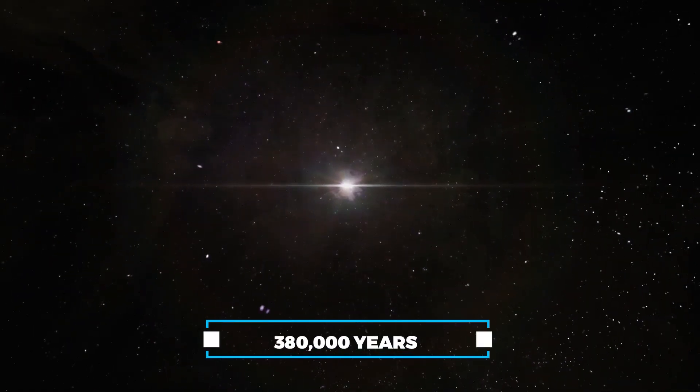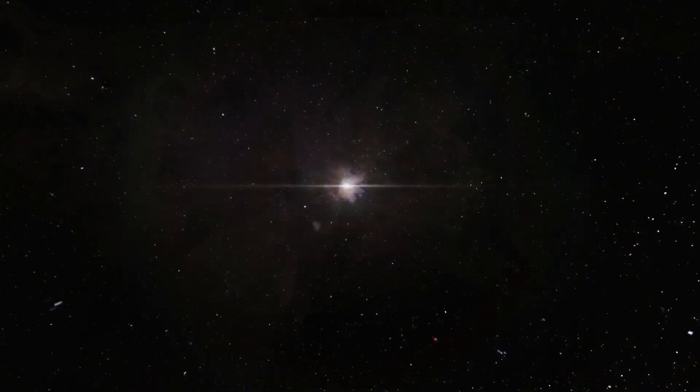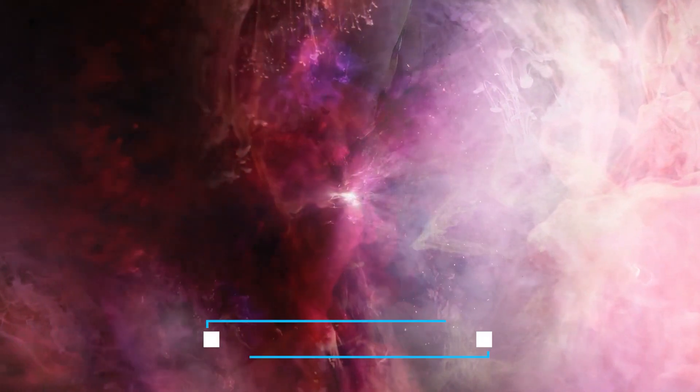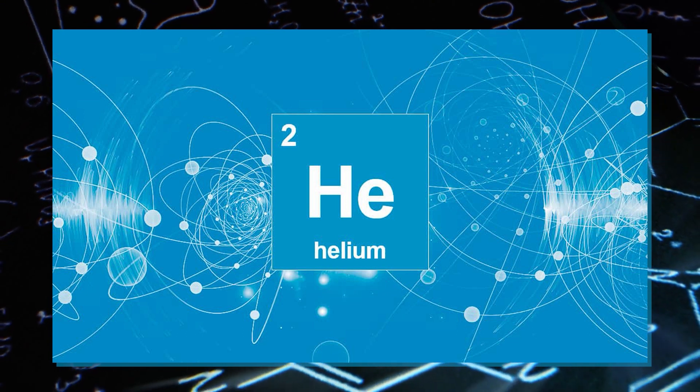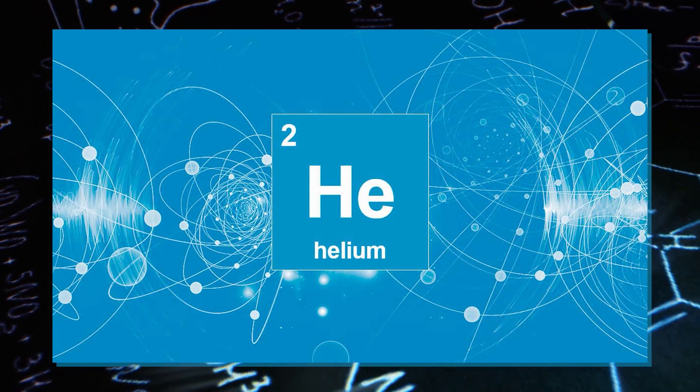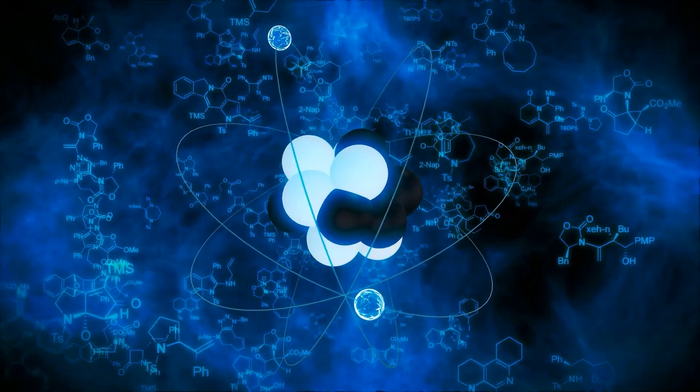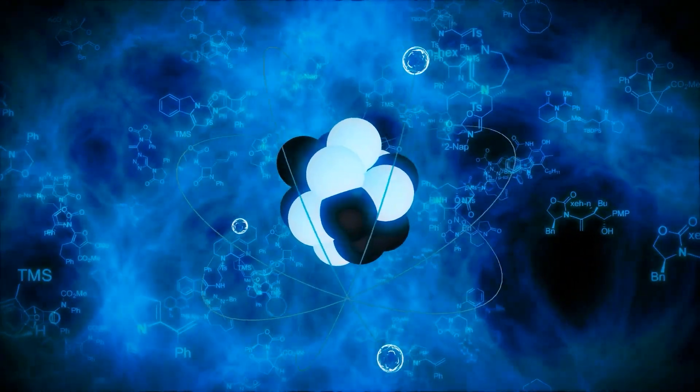Fast forward to about 380,000 years after the Big Bang, and things had cooled down to around 3,000 degrees. At this time, the first molecule, made of helium and H2, appeared. It was a shift from simple atoms to complex molecules.